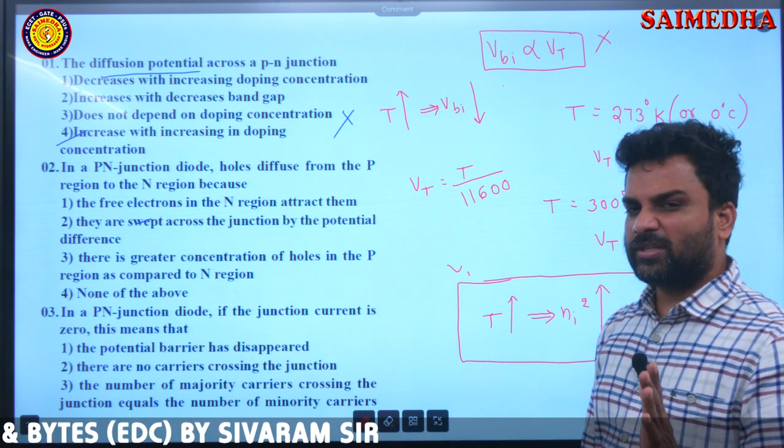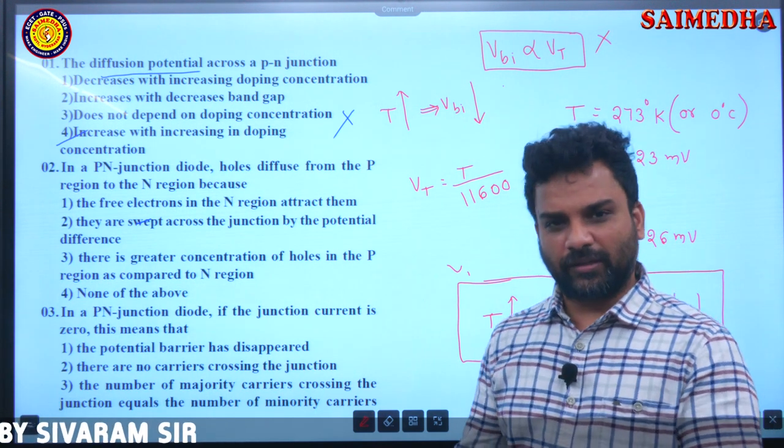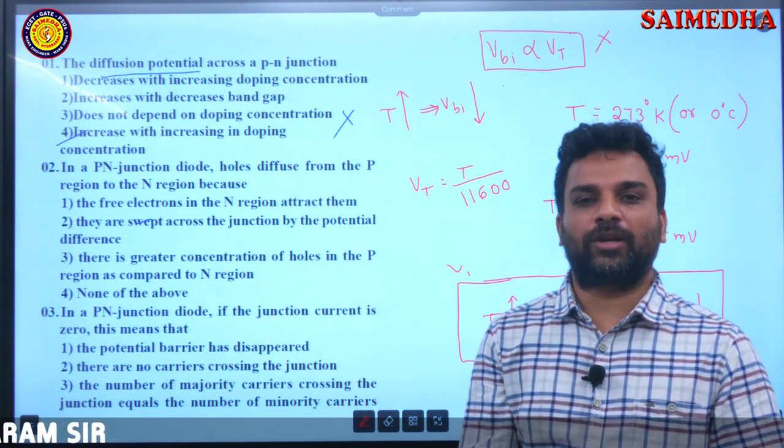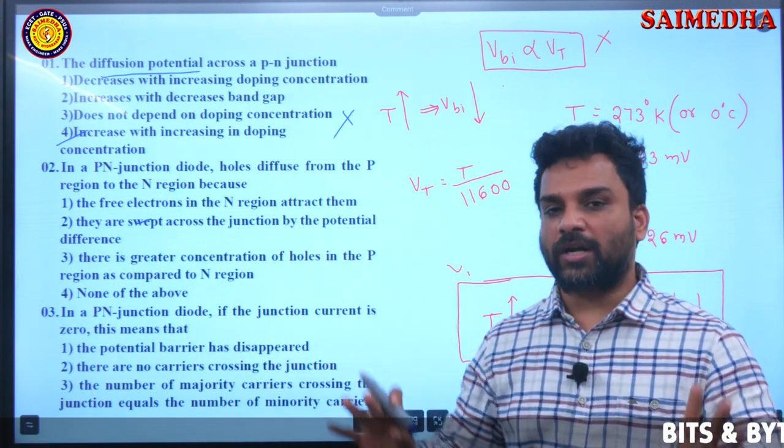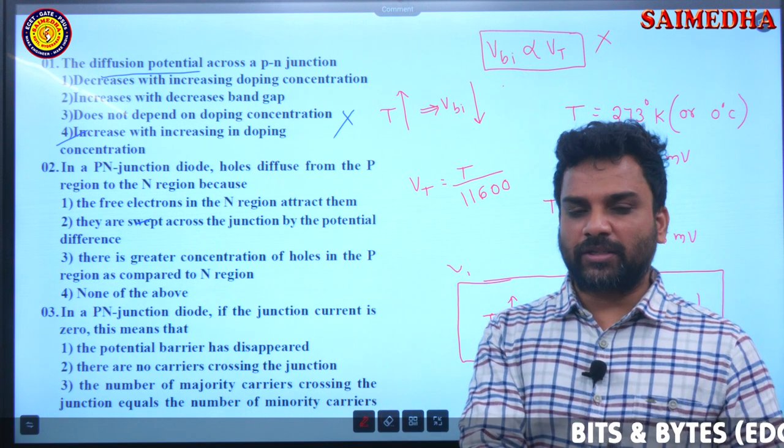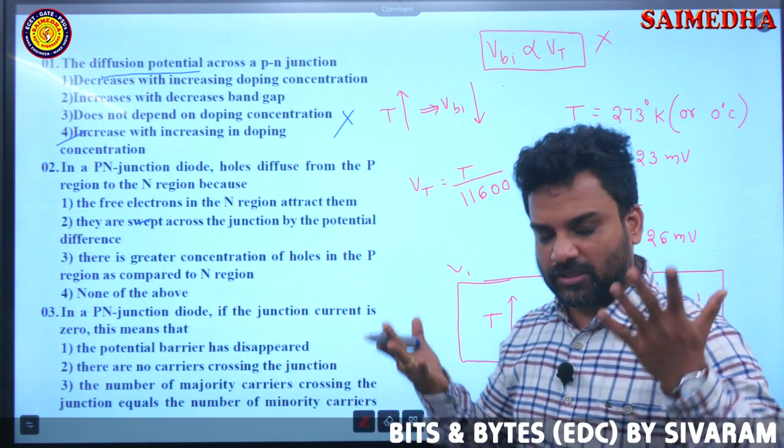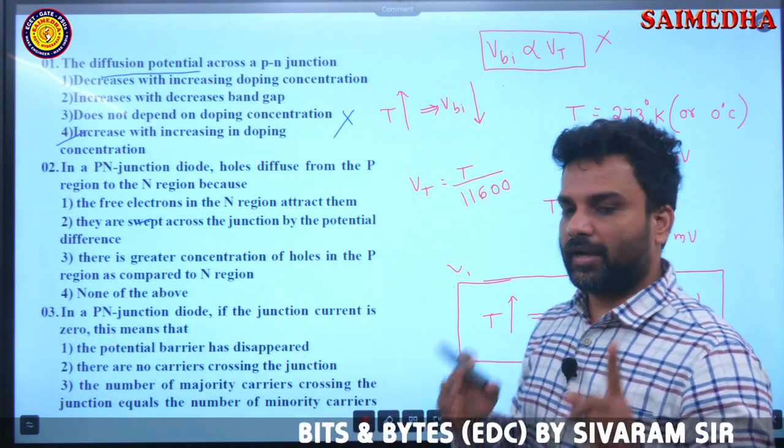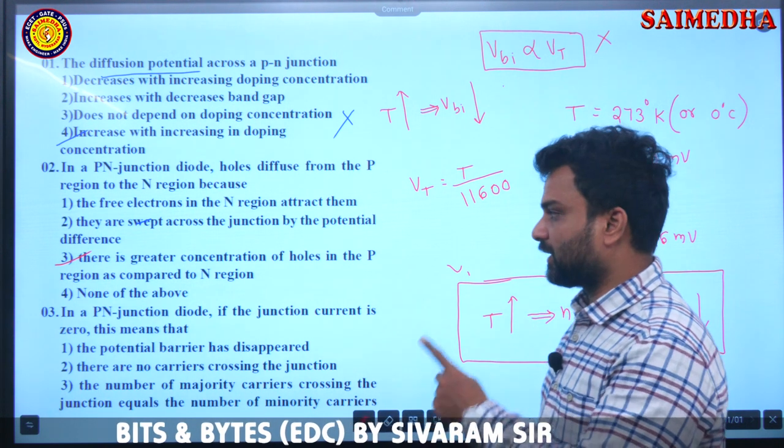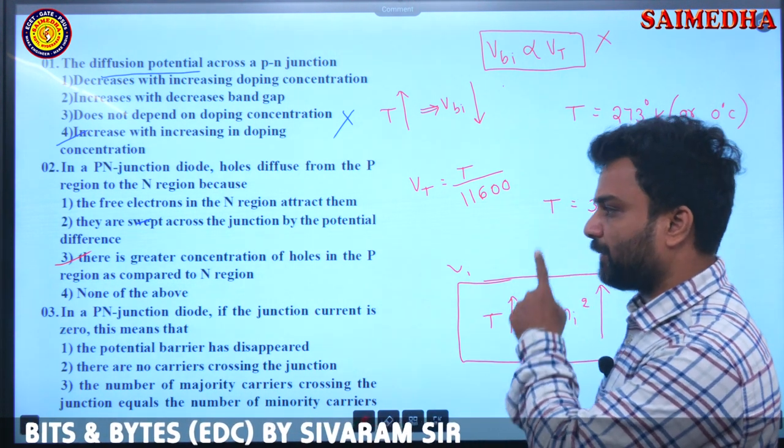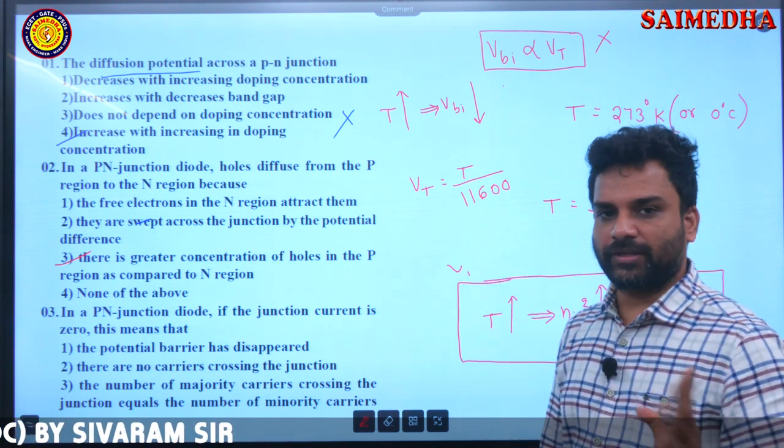P-N junction diode, holes from P type semiconductor move to N region. It is a diffusion concept. From higher concentration place to lower concentration place. That's the reason. Hence correct answer is option 3, there is greater concentration of holes in the P region as compared to the N region. Okay students.